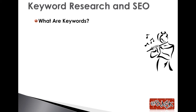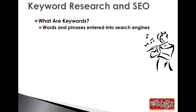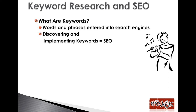First of all, what are keywords? These are the words and phrases that relate to you and your website, entered into search engines such as Google or YouTube by potential customers or fans. Discovering what these keywords are and properly implementing them into your website content is a large part of what search engine optimization is. Google and other search engines rank web content, web pages, videos, images, largely based upon the keywords associated with that content. That makes sense — they want to return the most relevant results to the user.